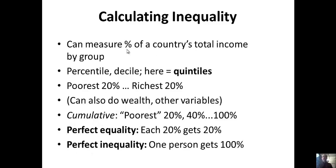We're going to measure total income in different percentage groups. You could do percentiles (100 groups) or deciles (10 groups), but here we're going to talk about quintiles, which is 5 groups. We have the poorest 20%, then the next 20%, the middle 20%, and then the richest 20% — we're going to see if they have more or less than 20%. You can do this for income or wealth, but here we're just doing income. Remember, income is not wealth: income is a flow and wealth is a stock. Income is earned annually or over time.